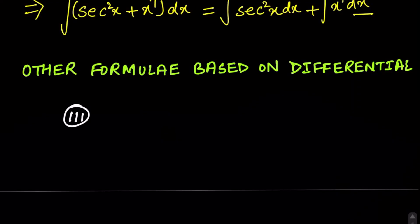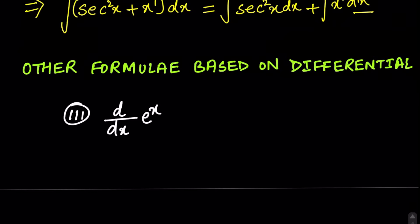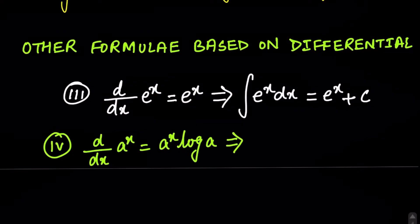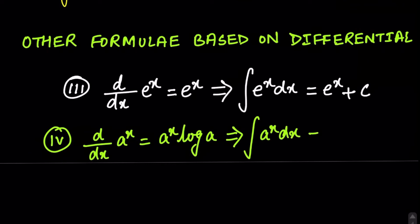The third and fourth formulas for indefinite integrals are for exponential functions. The first is e^x: the integral of e^x is e^x + C, because the differentiation of e^x is also e^x, and since integral is the inverse process, the integral of e^x is e^x + C. Second, for a^x: the derivative of a^x is a^x · log(a), so the integral of a^x is a^x / log(a) + C.